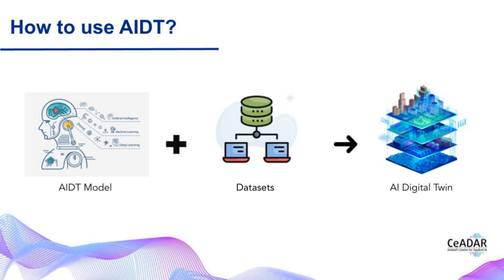So now let's talk about how to use AI digital twins. First, we need to build a high-quality dataset. The dataset can be accessed by anyone in the organization to solve different business challenges. Then we need to build a digital model where machine learning and deep learning algorithms are used to scale the capabilities of the dataset.